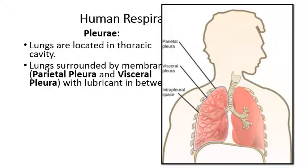You can see the pleural membrane — there are two of them. The outer one is called the parietal pleura, and the inner one is called the visceral pleura. The interpleural space contains the lubricating fluid, which prevents the lungs from directly rubbing against the ribs every time the intercostal muscles contract.